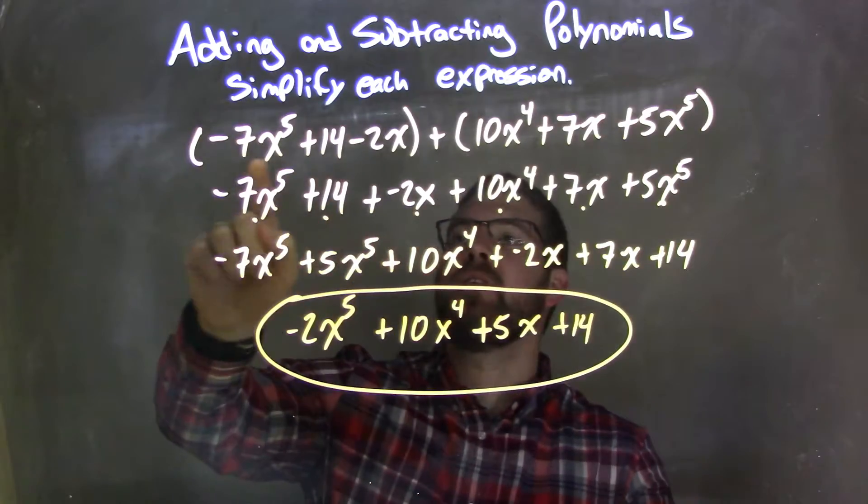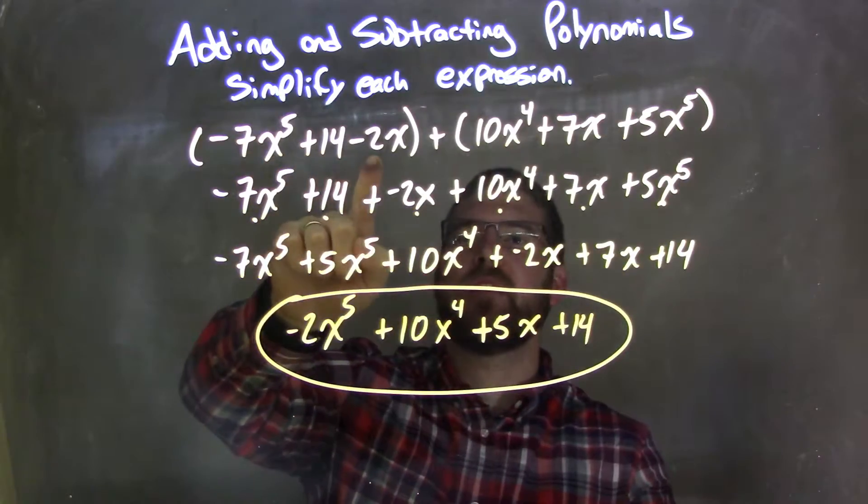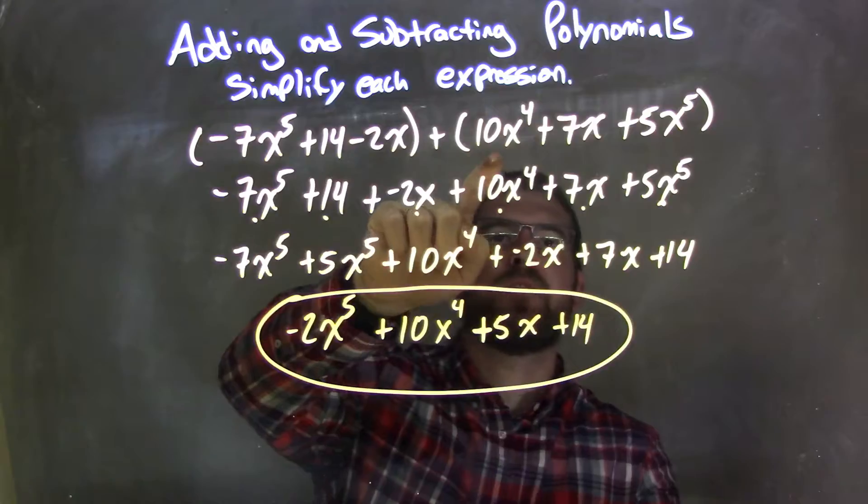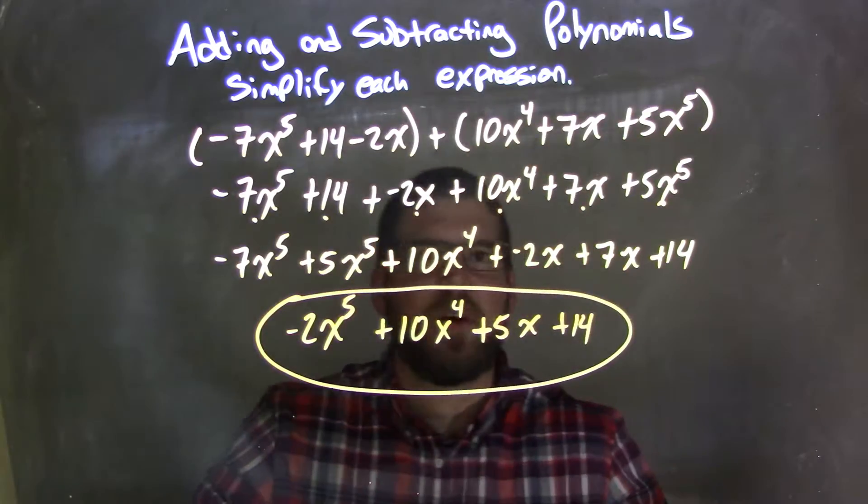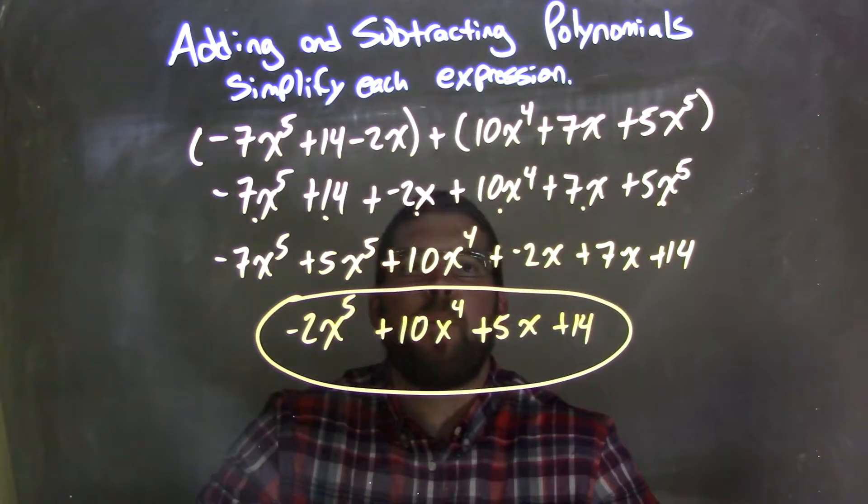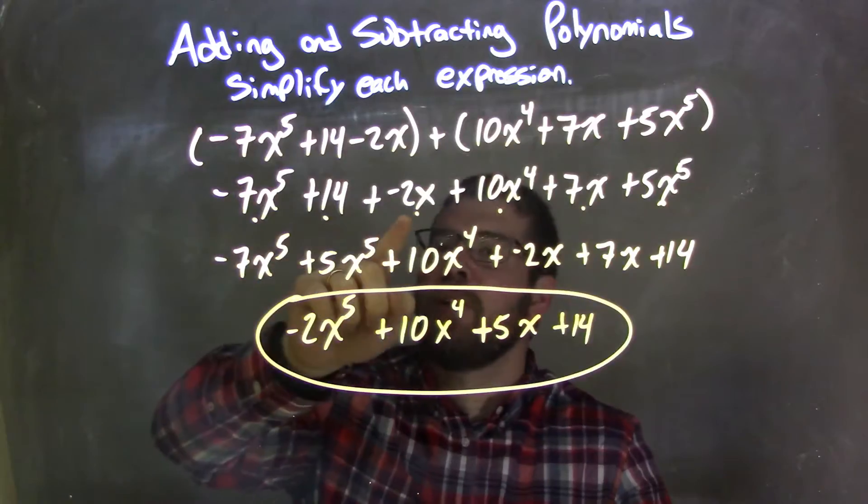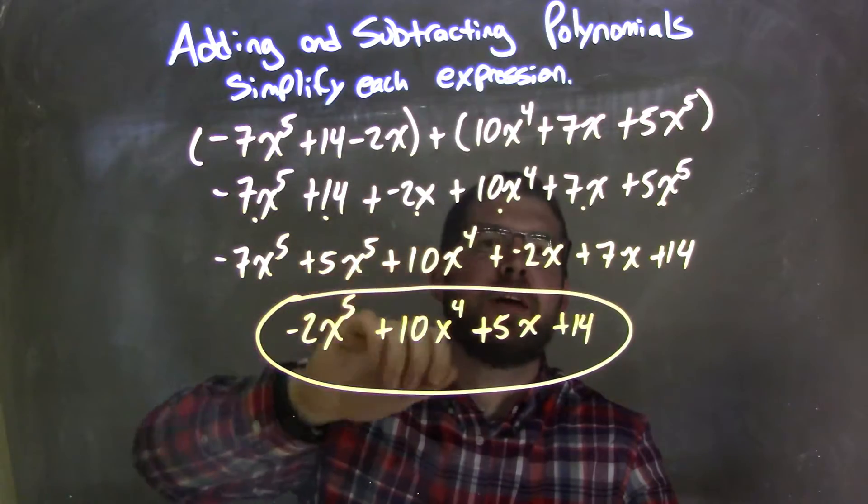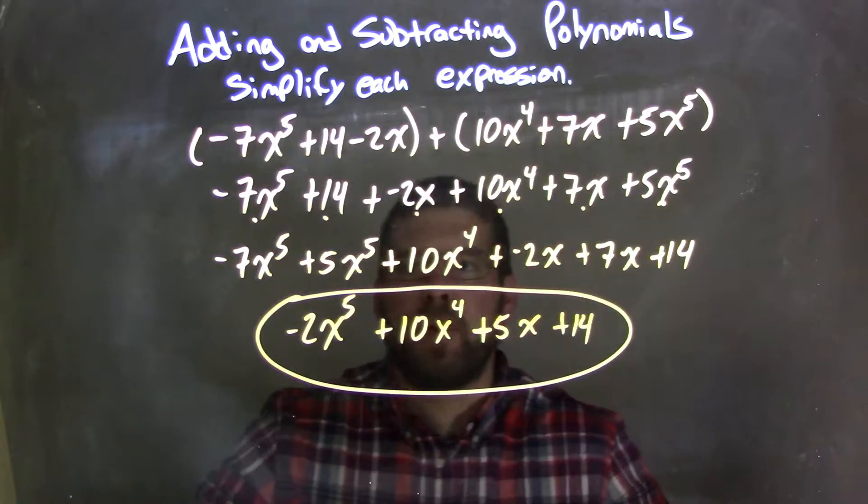Let's recap. We have our parentheses: (-7x^5 + 14 - 2x) + (10x^4 + 7x + 5x^5). I change everything to be adding a negative - really only that change is the -2x becomes adding a negative 2x. And I don't have parentheses anymore.